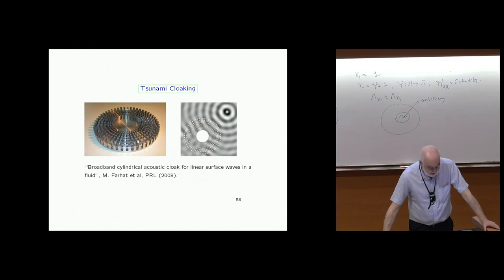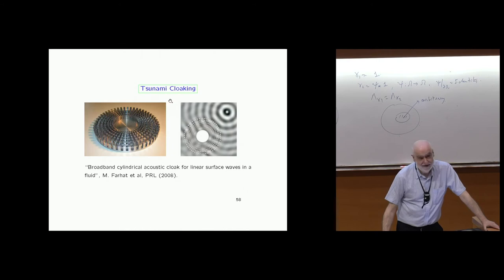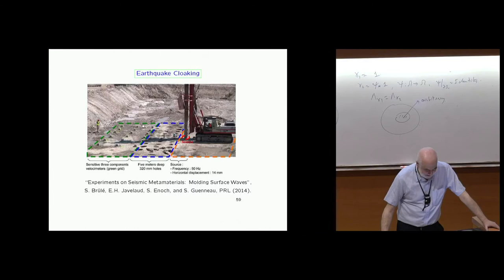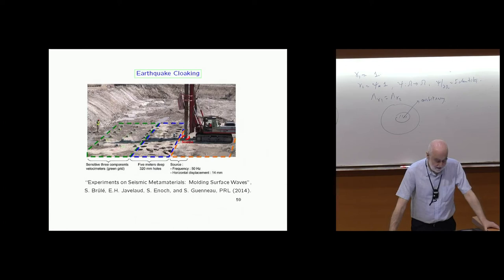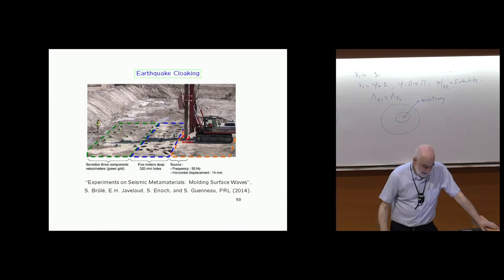The reason all of this works is because the equations are invariant under changes of coordinates. Of course, tsunami cloaking has not been done at the scale of an actual tsunami — but that's the idea: to make water go around. The application that interests me most, coming from a country with many earthquakes, is whether you can do this for seismic waves — building materials that make these waves go around.